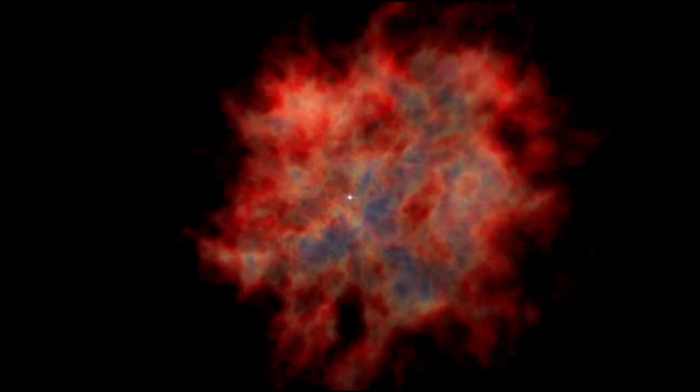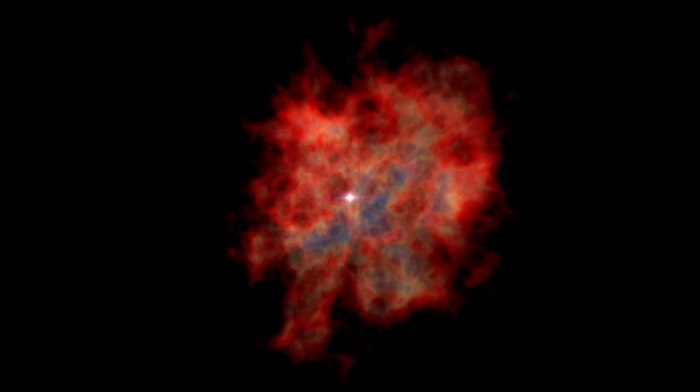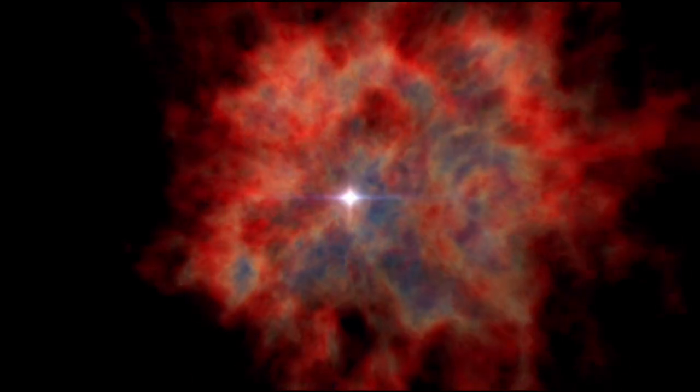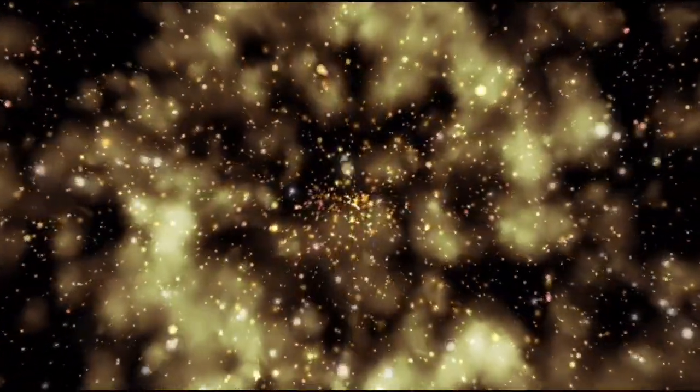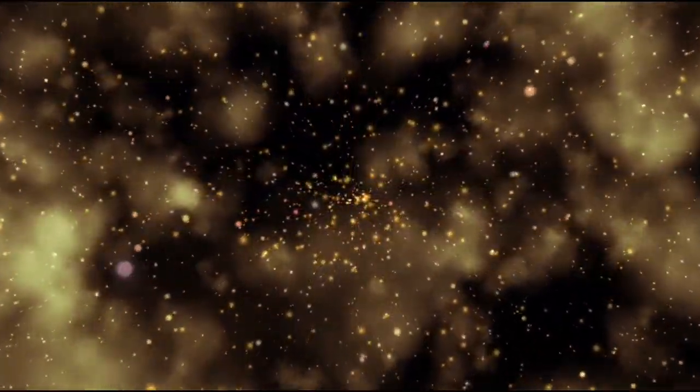Polaris is not a single star. Rather, it is part of a complex triple star system. Polaris A and Polaris Ab form a binary pair, and Polaris B orbits around them. The interactions between these stars create gravitational forces that shape their orbits and influence their behavior.